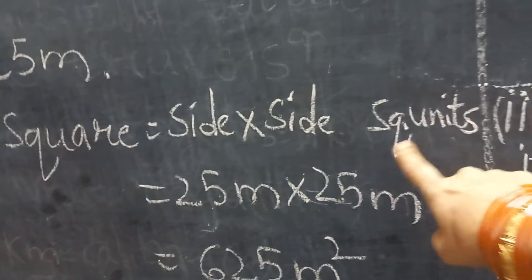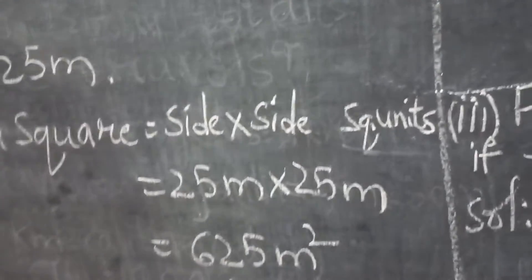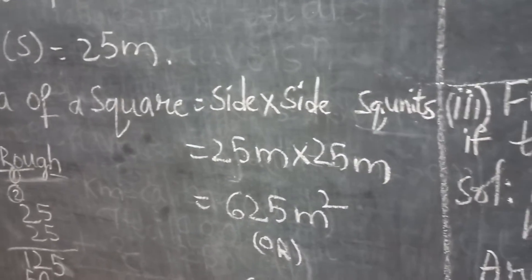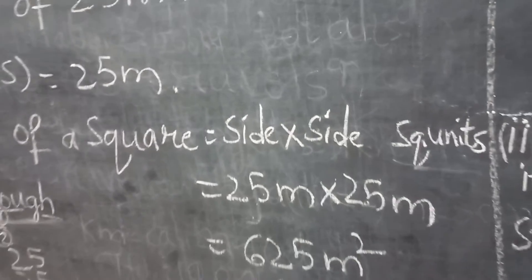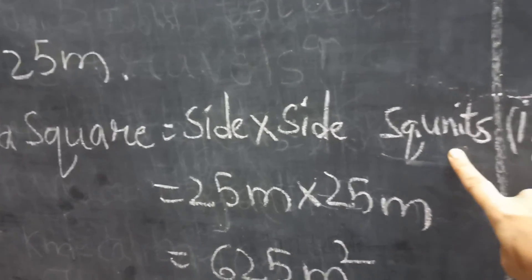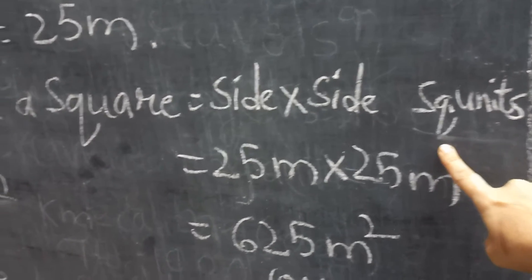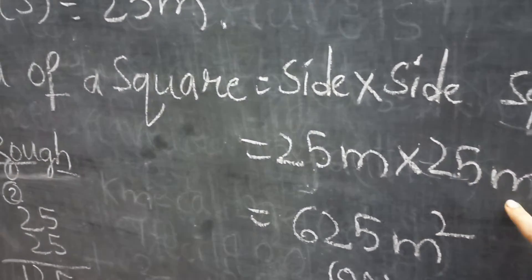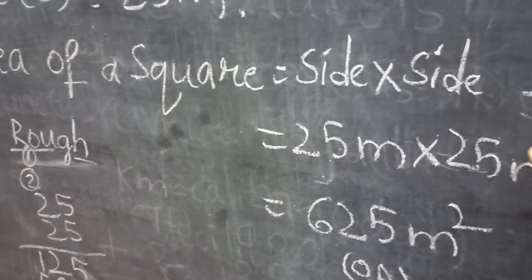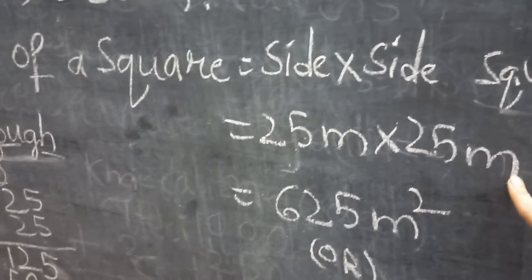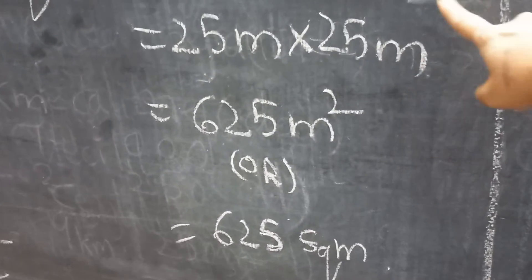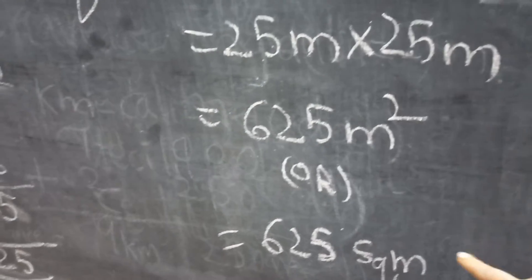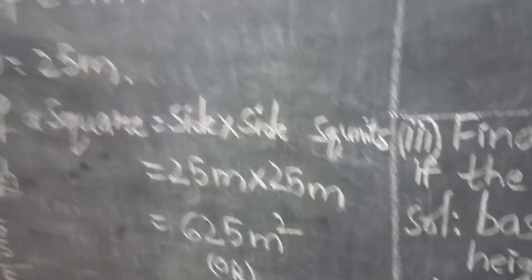I written here 625. Now, what are the square units? Units plays a big role in the areas. After finding all the values, calculations, it is important to mention the units also. So, square units, so meter into meter, meter square. Meter into meter, 2 times meters are there, so meter square. Square is the square, meter is the meter.